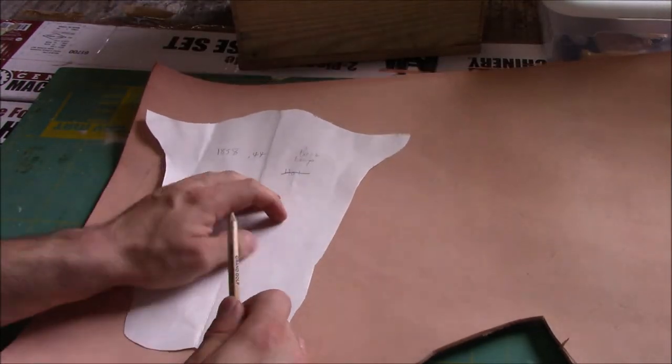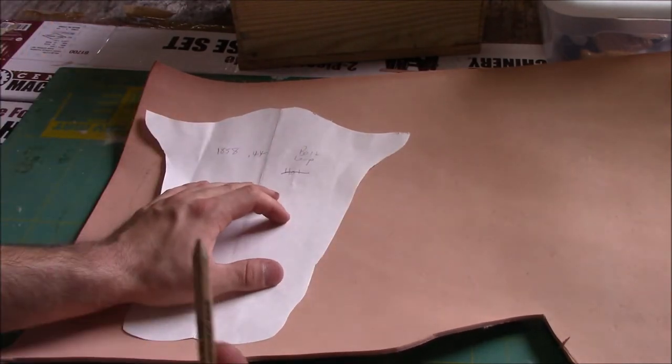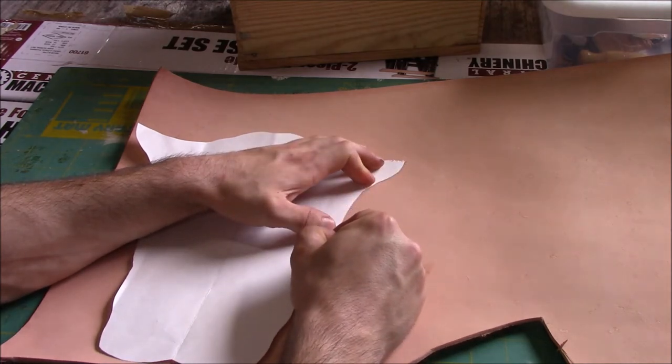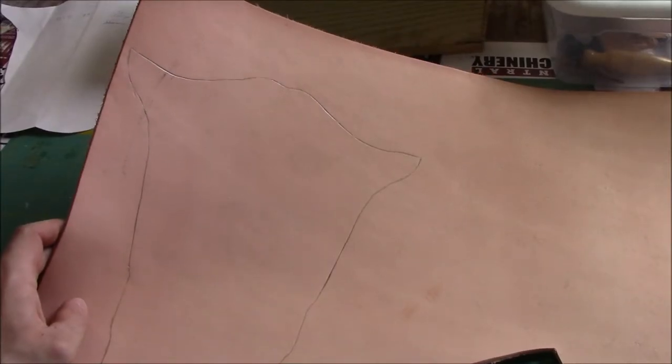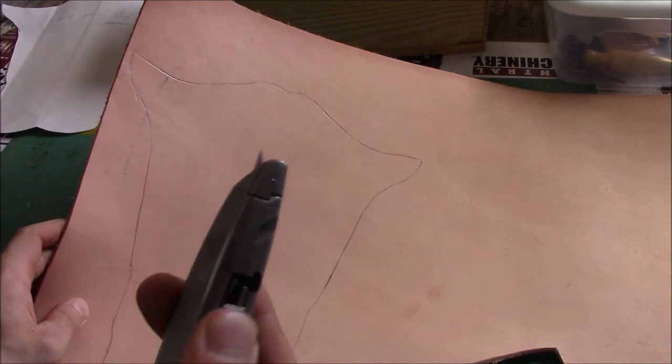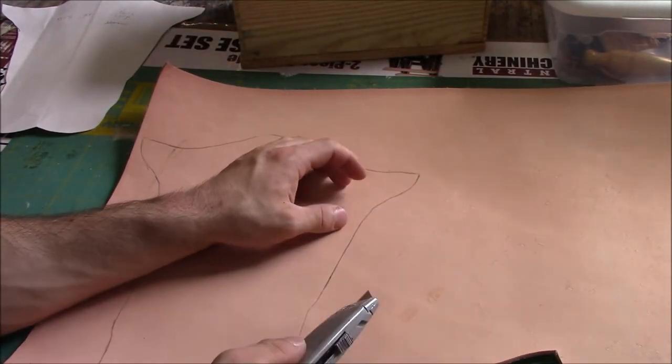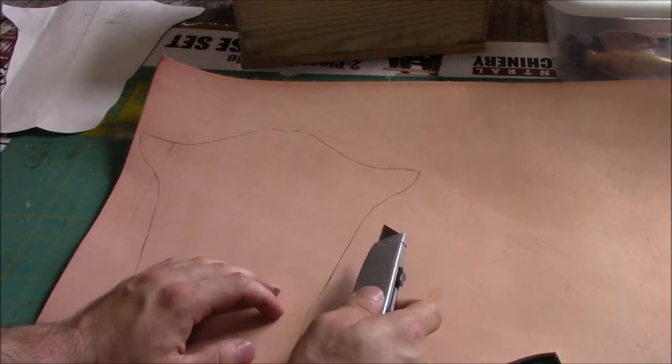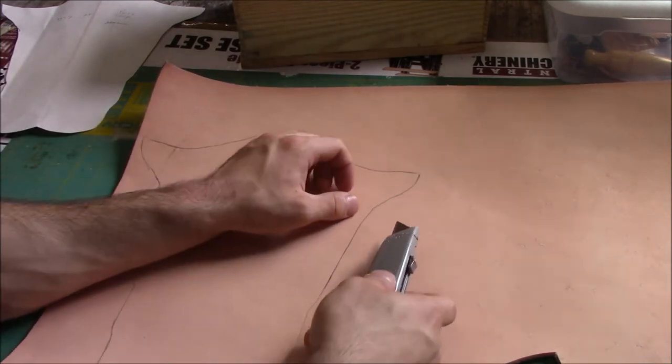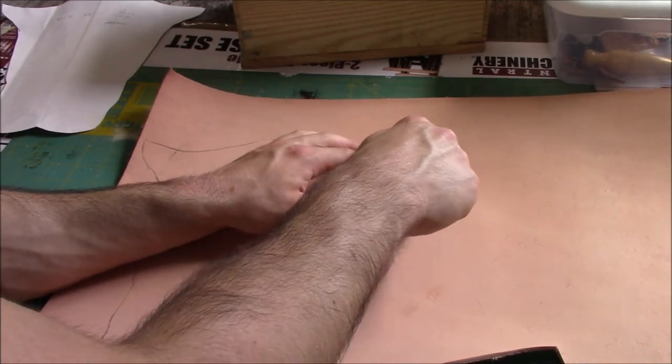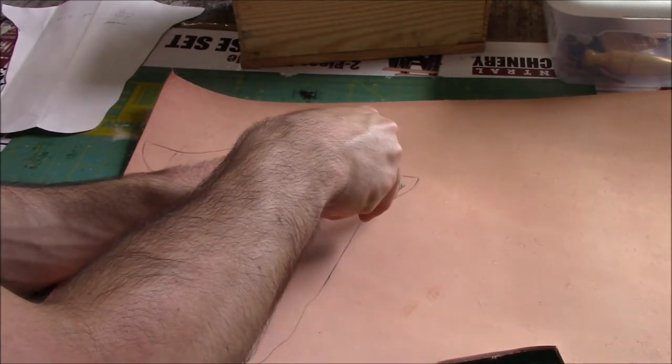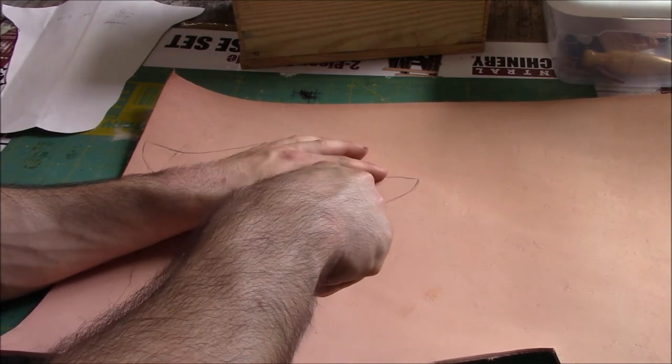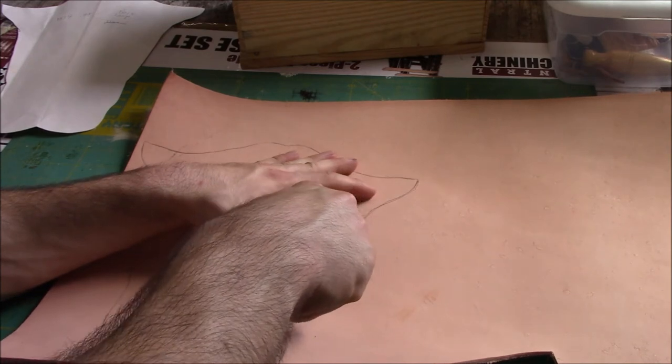We're going to trace this out on the leather now. Pretty simple. You just put it on the leather, take a pencil or pen and just mark around it. That's what I'm going to do here. I'm just going to go all the way around our template here. So we got the template traced out. What I'm going to do is cut along the line. I'm just going to go for it. You can use a leather snip or whatever you want to use.